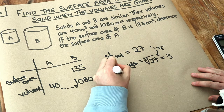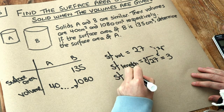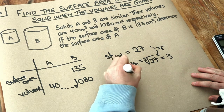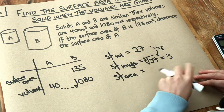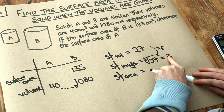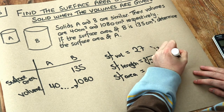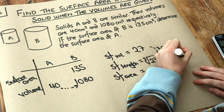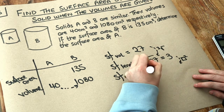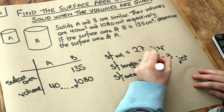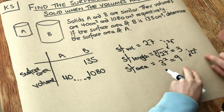And then we also saw in a previous video how we go from the scale factor of length to the scale factor of area such as surface area. If we have the scale factor of length of 3, remember we square it to get the scale factor of area. So we do 3 squared and that gives us a scale factor of surface area of 9.